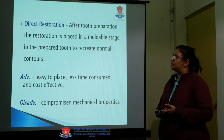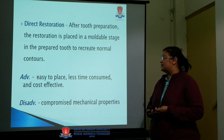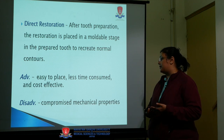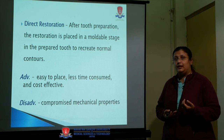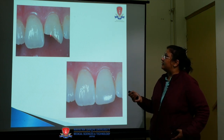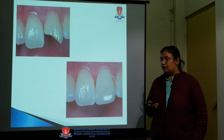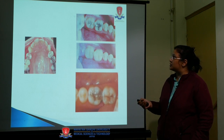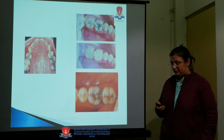In direct restoration, after tooth preparation the restoration is placed in a moldable state in the prepared tooth to create a normal contour. Advantages are that it is easy to place, less time-consuming, and cost-effective. Disadvantages include compromised mechanical properties such as compressive strength; for example, composites that are not polished well can result in staining. A fractured tooth can be directly built up with composite in an aesthetic way, and faulty restorations can be replaced with tooth-colored fillings. Direct restorations like amalgam — silver fillings — can also be used.